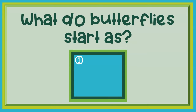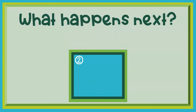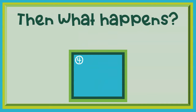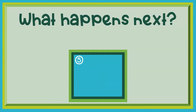What do butterflies start as? Butterflies start as tiny eggs on a leaf. What happens next? A caterpillar hatches. What happens after that? The caterpillar forms a chrysalis and stays inside for a long time. What happens next? A butterfly emerges.